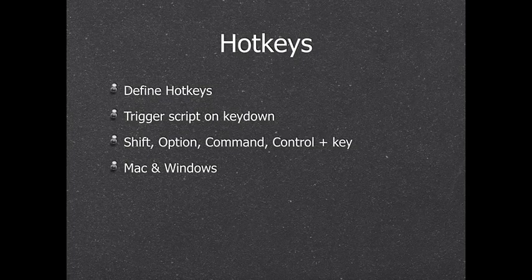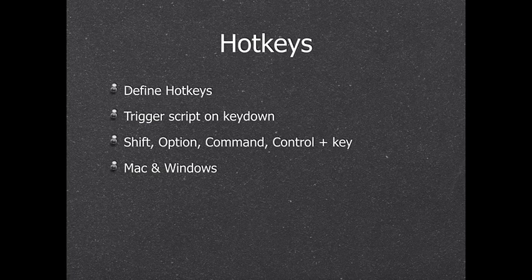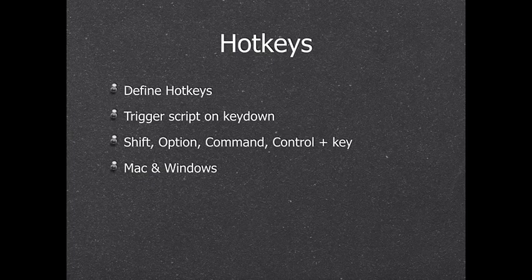We can define hotkeys — a certain key combination like an F-key that triggers a script. FileMaker doesn't need to be the front application. For example, a customer using Apple Mail sees an email and wants it in FileMaker — he presses a key, FileMaker runs a script to get the email text from Apple Mail, gets the content of the email, and processes it by creating a record in a certain table.